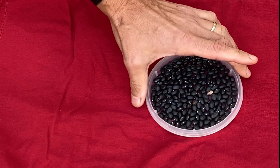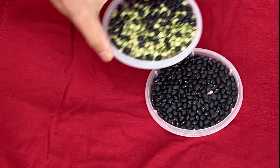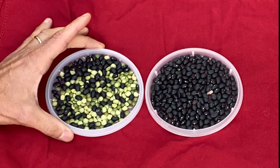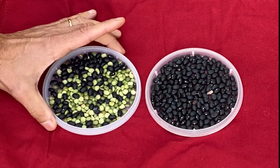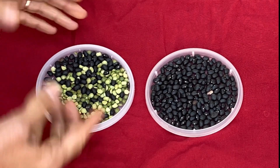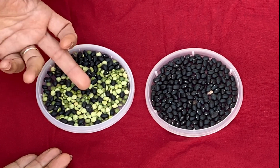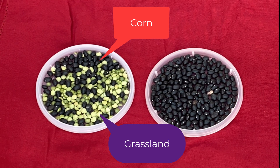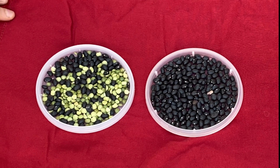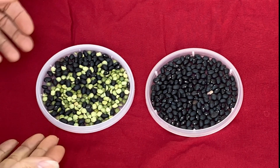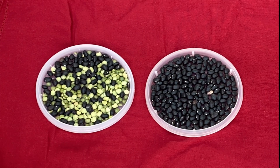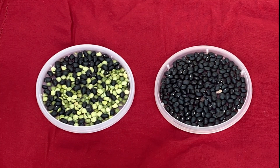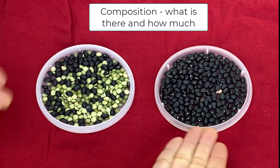Now let's imagine we add a little bit of diversity to this landscape. Maybe we have something that could look like this — this landscape has not only the black beans but also these green peas. Let's pretend that the green peas are grasslands. So now we have a landscape with two different elements in it, and the elements seem to be interspersed — maybe about 50-50. This is what we refer to as composition: how much is there and how many different elements are there.